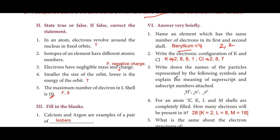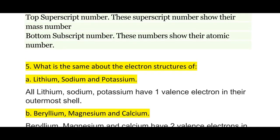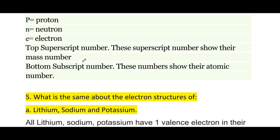Third: Write down the names of the particles represented by the following symbols and explain the meaning of the superscript and subscript numbers. P denotes the proton, N denotes the neutron, E denotes the electron. The superscript number shows the mass number, and the bottom subscript shows the atomic number.